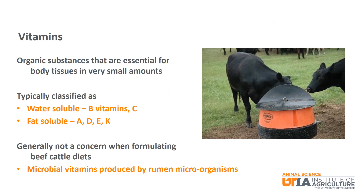Vitamins are organic substances that are essential for body tissues but are needed in very small amounts. They are typically classified as water-soluble or fat-soluble. Water-soluble vitamins include all of the B vitamins as well as vitamin C. Fat-soluble vitamins include A, D, E, and K. Vitamins are generally not of concern when formulating beef cattle diets due to the microbial vitamins produced during ruminal fermentation by microorganisms.